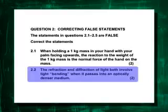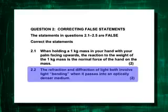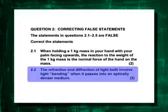Question 2.2: the refraction and diffraction of light both involve light bending when it passes into an optically denser medium. That is incorrect because diffraction is about a bending of light around an obstacle, around a barrier, or through a narrow gap — it doesn't involve an optically denser medium. Diffraction is about bending at an edge or in a gap, not what happens with refraction when light goes from air into water or glass.